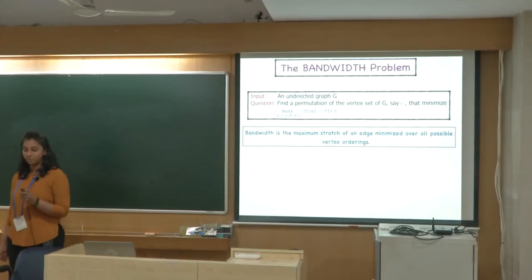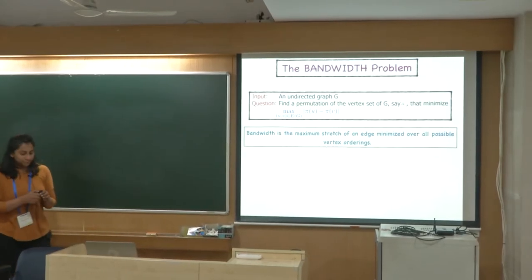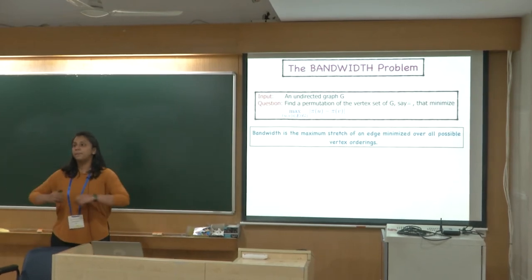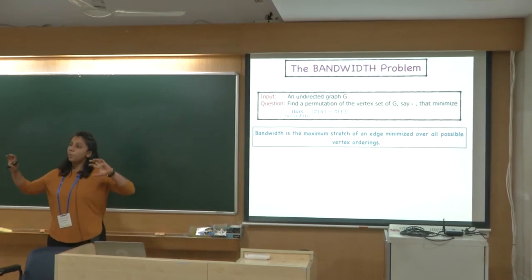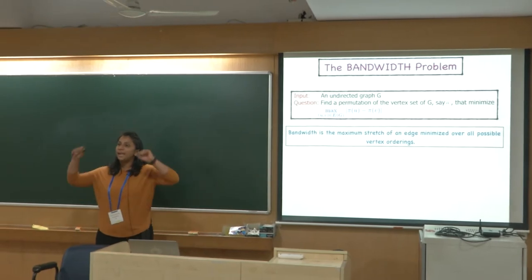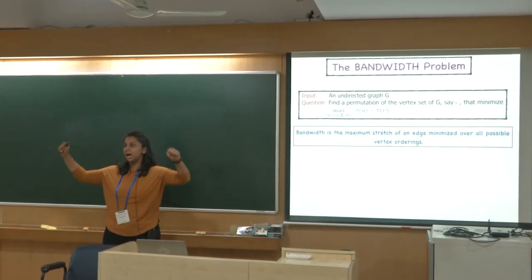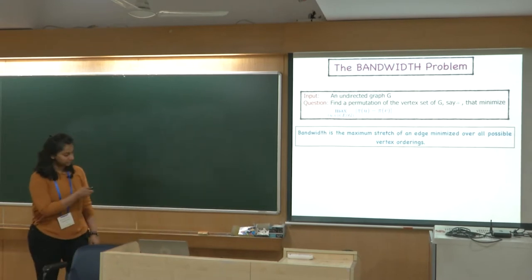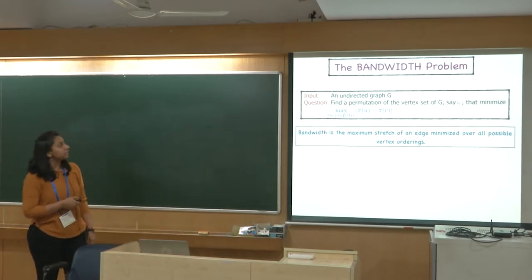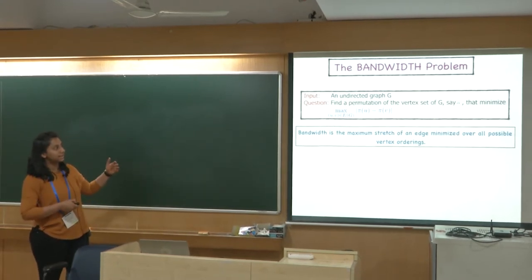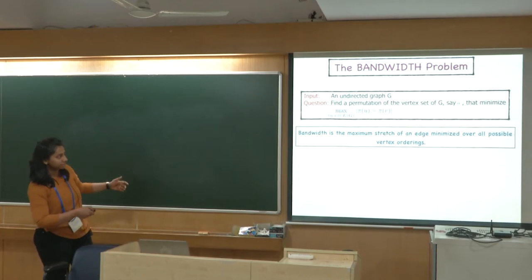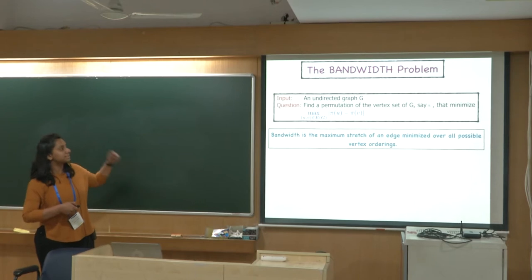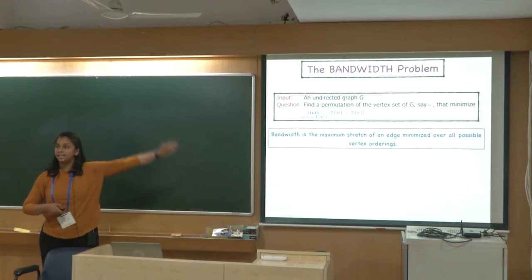This is quite a classical problem. You are given an undirected graph G and the goal is to come up with an ordering of the graph where, informally speaking, the endpoints of any edge are not very far away in the ordering. You want to find a permutation of the vertex set that minimizes the maximum stretch of any edge.